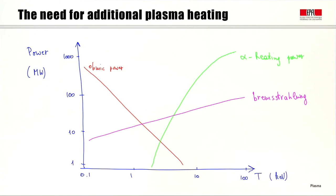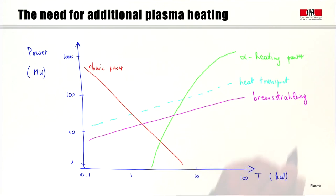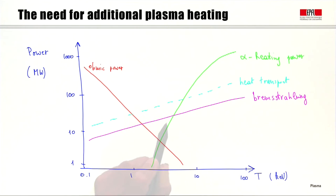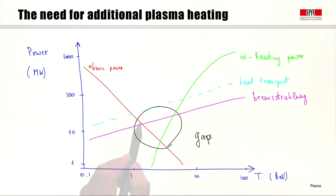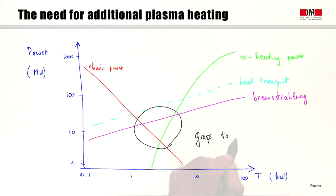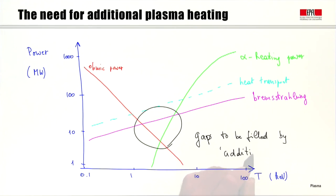Even without invoking conduction and convection transport — which in practice dominates over Bremsstrahlung — we have a gap in the region of a few keV where we cannot connect the ohmic power to the alpha heating power. This shortfall of power in the few-keV temperature range means we need to heat the plasma by other means. This gap must be filled by what we call additional heating.